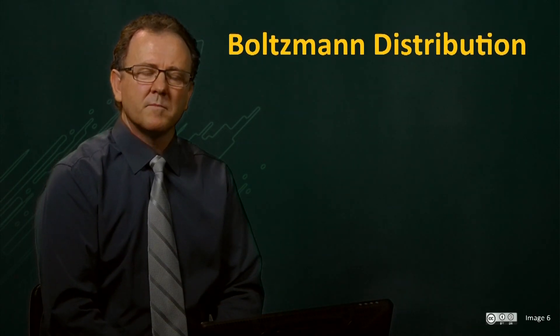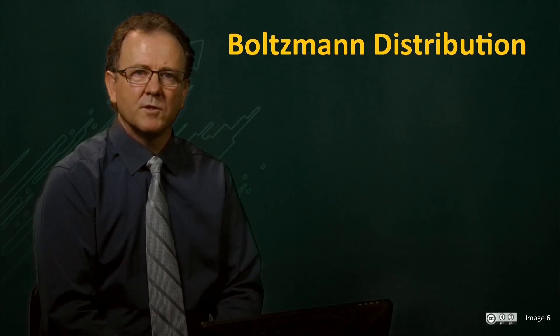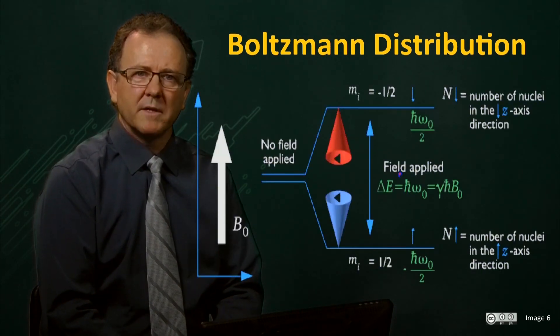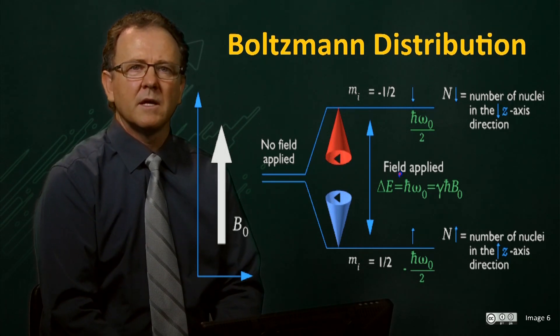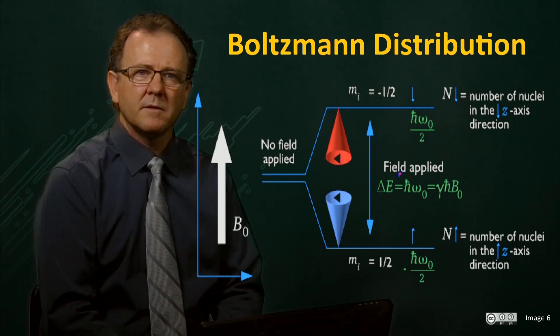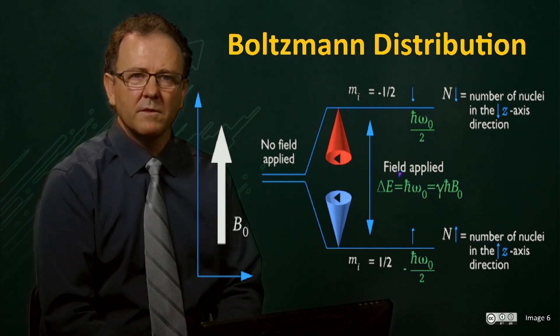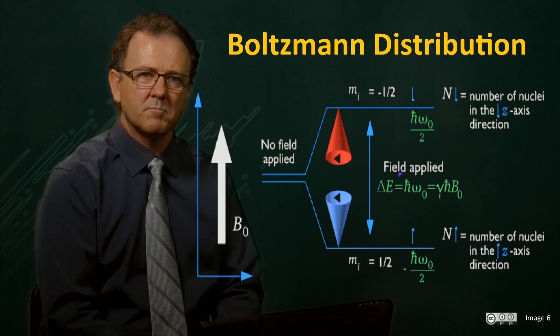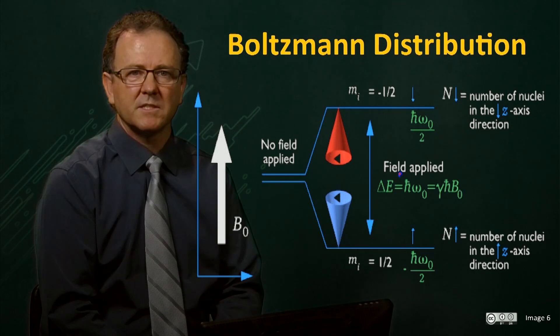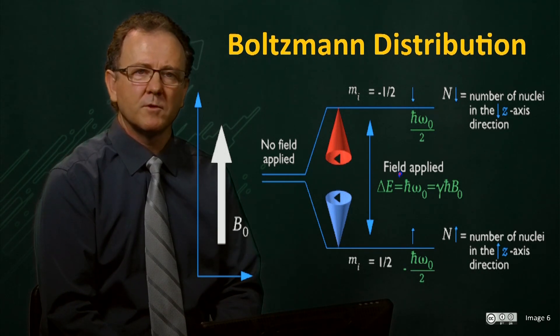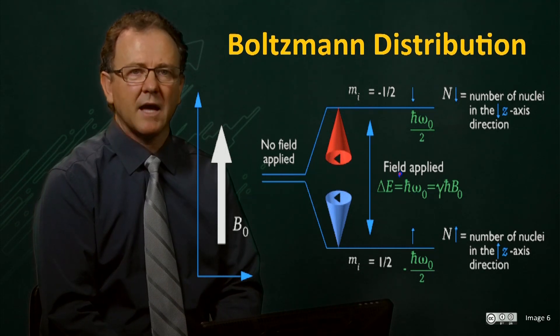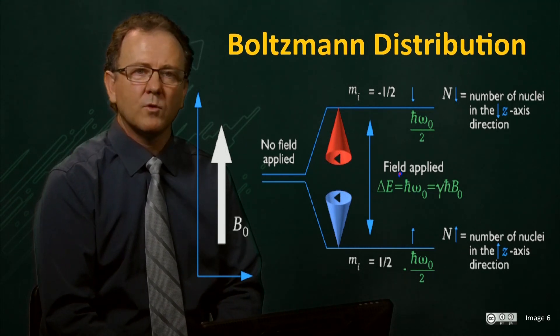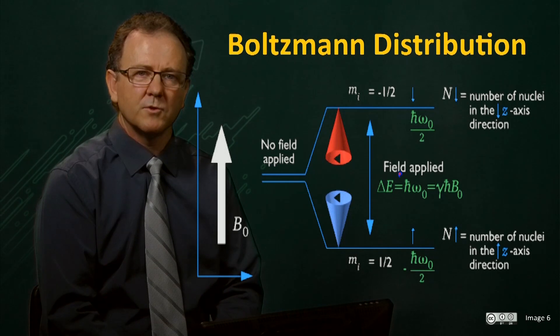So to summarize, in the absence of a magnetic field, proton spins have no preferred direction, are all of equal energy and when a field is applied, proton spins are lined either with or against the field direction and the energy difference of these states is proportional to the field strength B0. The relative spin populations and the Larmor frequency are therefore also directly proportional to the field strength.